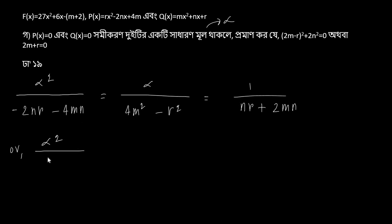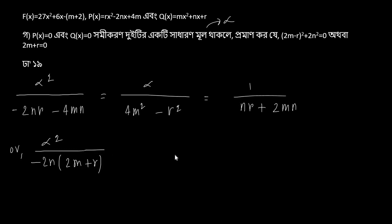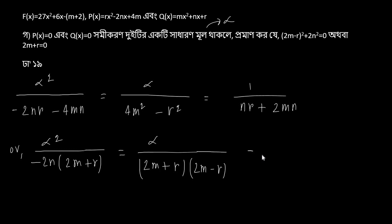From here we write minus 2n as the common denominator. Here we get r, next 2m. So we write 2m + r. Applying the b² - a² type formula, we get: alpha divided by ... equals 1 divided by n, with common factor n giving nr + 2m, then 2m + r.